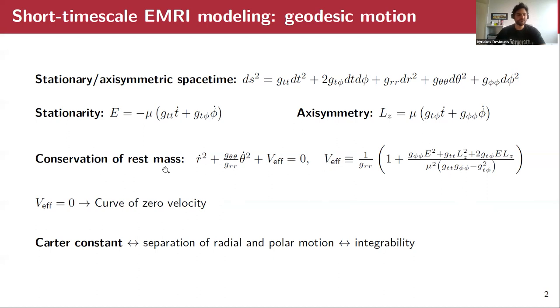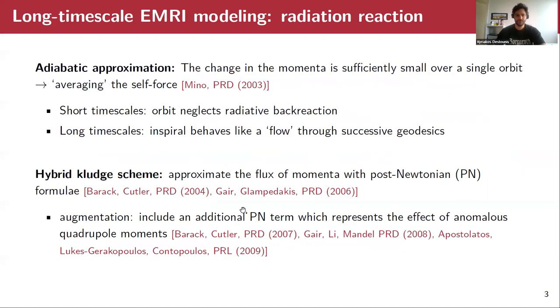Let me just say that if we put this effective potential equal to zero, then from the conservation of the rest mass, it's obvious that we should have the velocity components r dot and theta dot to be zero for this equation to be satisfied. And this is where we have the curve of zero velocity.